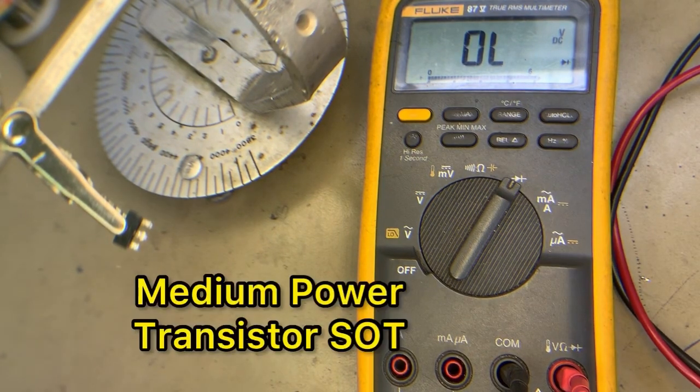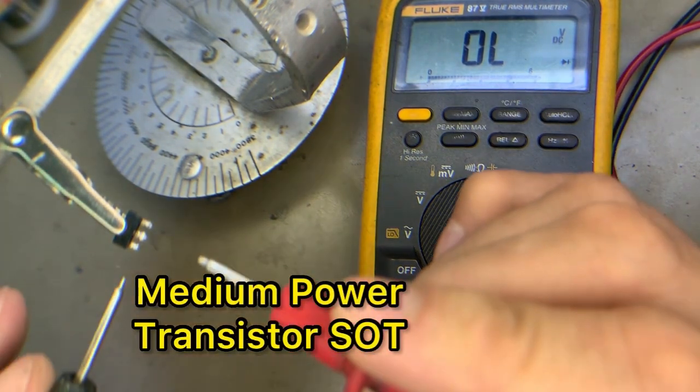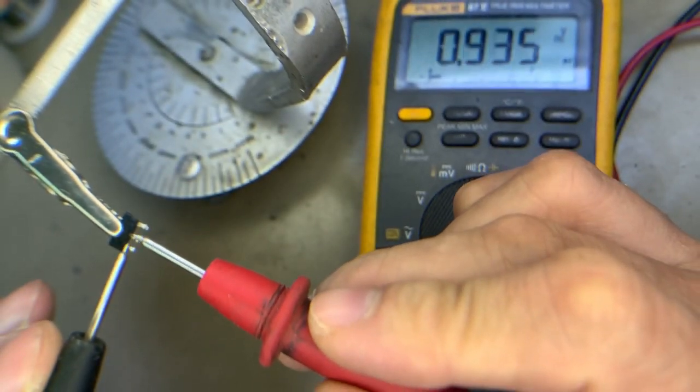Pin 1 is base, pin 2 is collector, pin 3 is emitter. Let's press the base to collector. There's a reading, so it's okay.